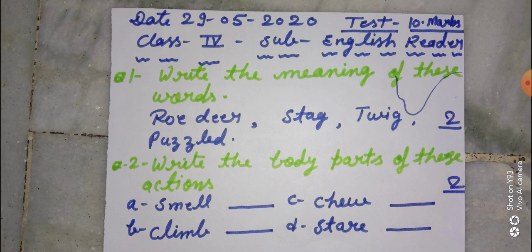Question number two: Write the body parts of these actions. Aapko in actions ke body parts likhne hai as smell, climb, chew, and stare. Means just ye body, ye action humari body ke kis part ke dwara kiye jate hai, us body parts ka aapko name likhna hai. Okay.